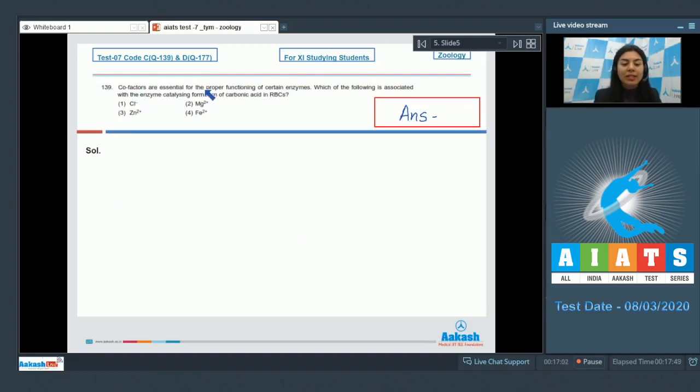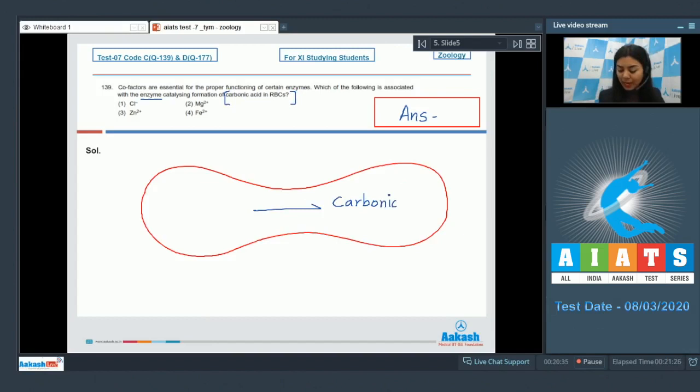Question 139: Cofactors are essential for the proper functioning of certain enzymes. Which of the following is associated with the enzyme catalyzing formation of carbonic acid in RBCs? Chloride ion, magnesium ion, zinc ion, ferrous ion. The question is hinting towards an enzyme. This enzyme catalyzes the formation of carbonic acid in RBCs. In an RBC, students, the carbonic acid is formed due to reaction between CO₂ and water. This is a reversible reaction and it takes place due to the presence of an enzyme, and this enzyme is carbonic anhydrase.